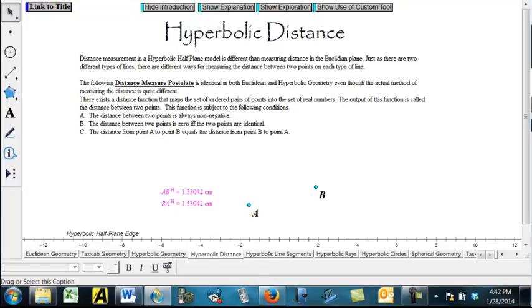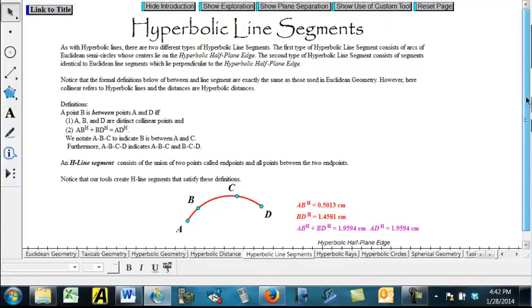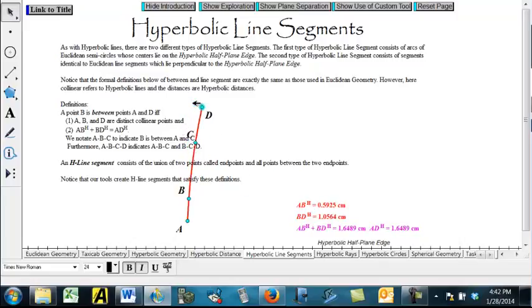So we'll come back to hyperbolic distance in a bit, but intuitively, hyperbolic line segments are what you would probably think they would be. They're part of a hyperbolic line, whether that's one that's straight up and down here, so there'd be a vertical line segment, or an arc of a circle going this way. So it's a continuous piece. It has specific endpoints. And of course, points B and C are between there, and this actually illustrates a betweenness relationship. A dash B dash C dash D is actually illustrated by this particular drawing. So you can kind of see what between means in terms of a hyperbolic line segment and what a hyperbolic line segment looks like.